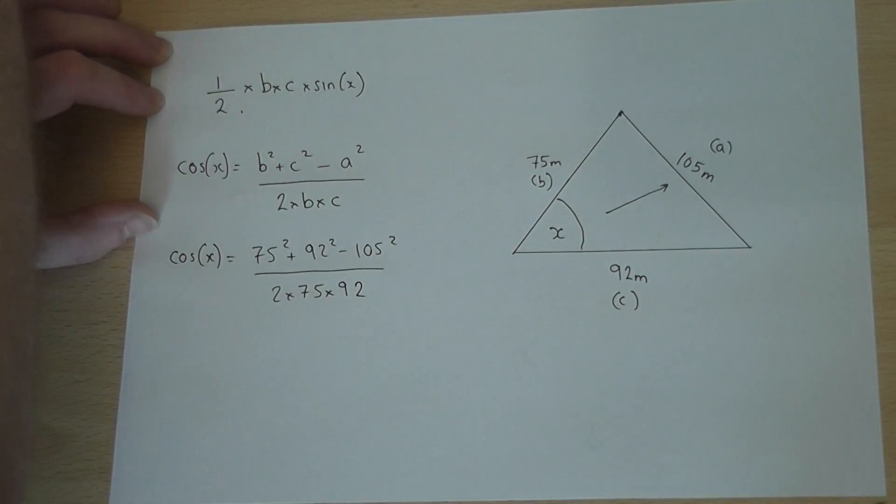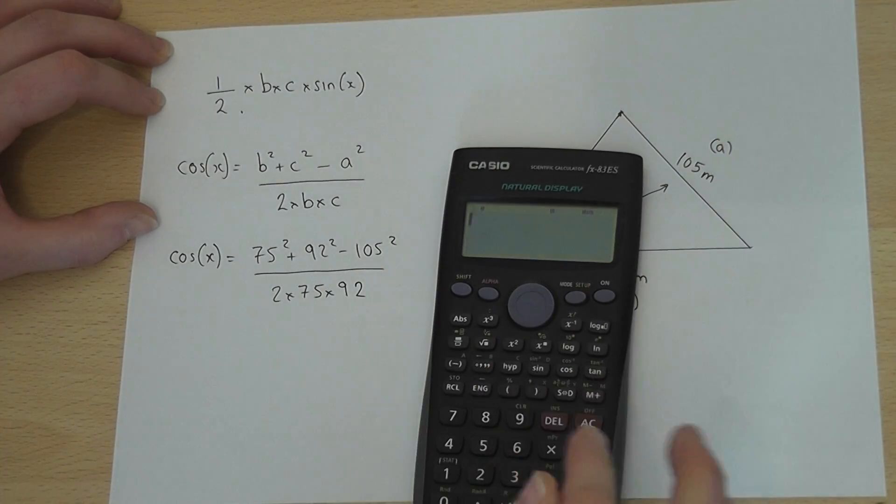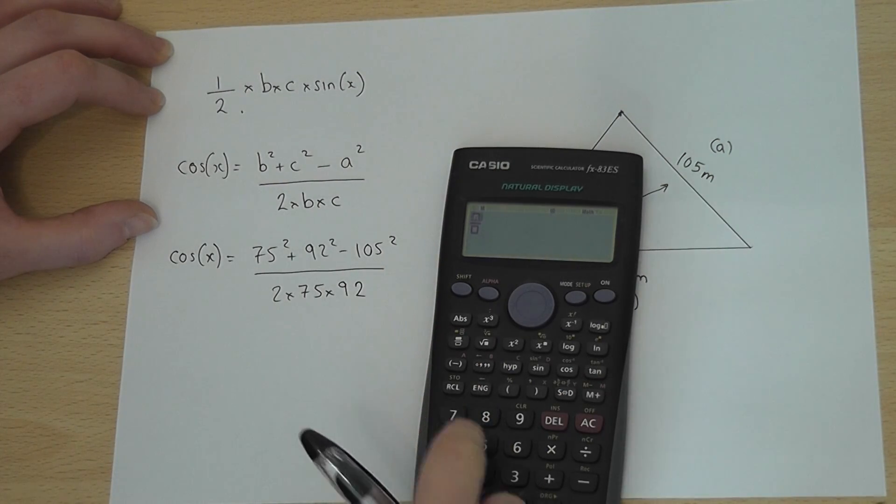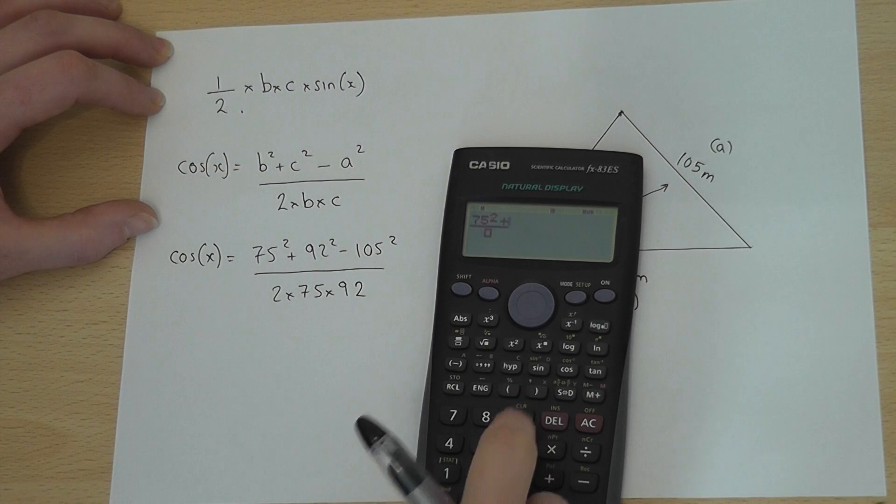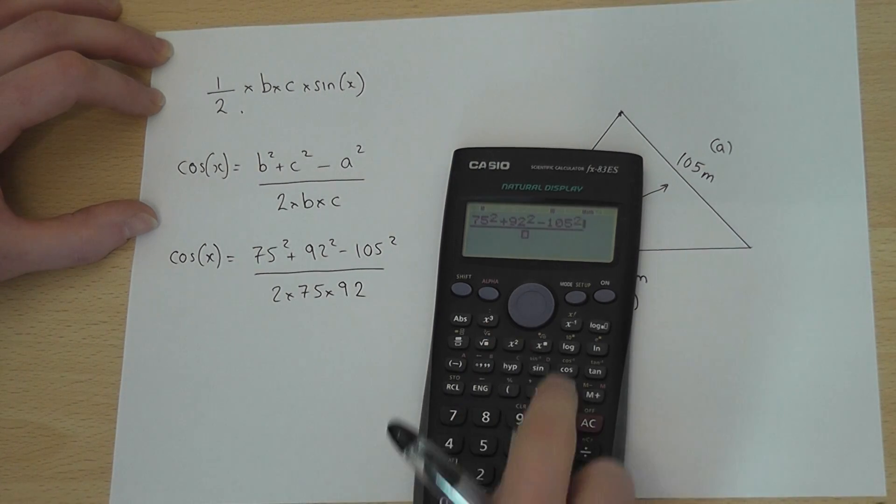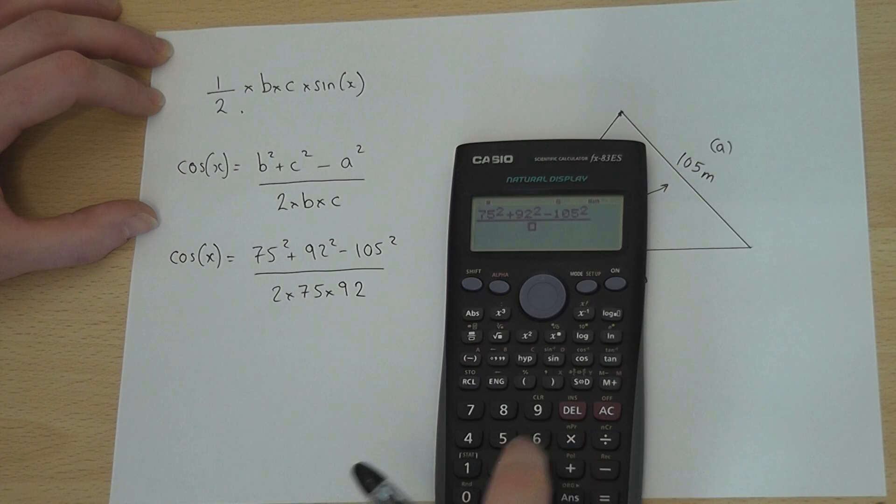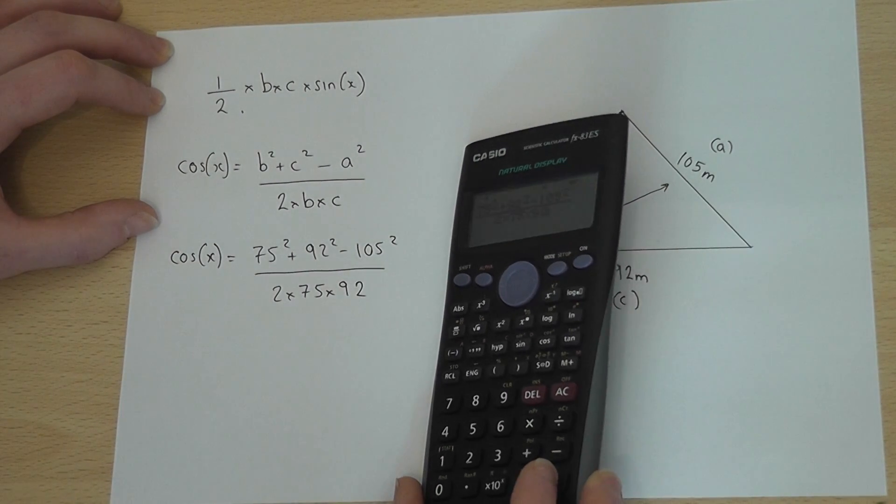So if I put this into my calculator, I've got 75 squared plus 92 squared, take away 105 squared, all divided by 2 times 75 times 92. So if I press Enter,